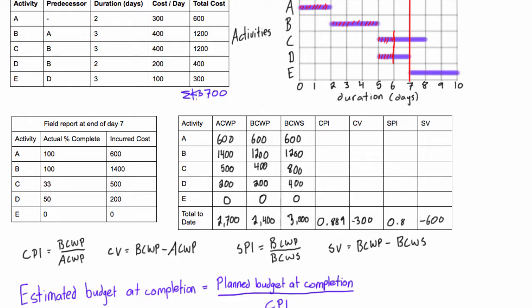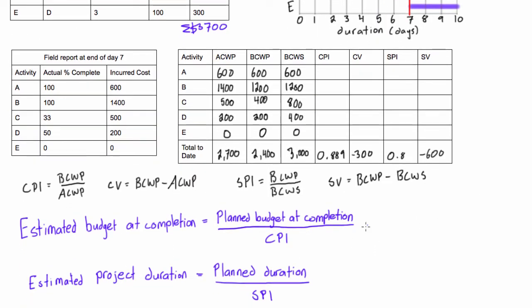Okay, $3,700, that's the total project cost. So all we need to do then is come down here, we have 3,700 and we will divide this by our CPI for the project to date.